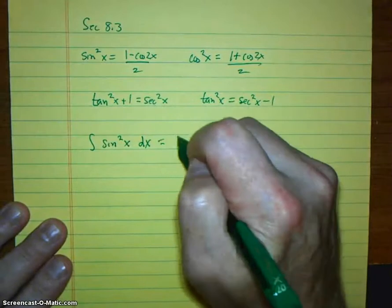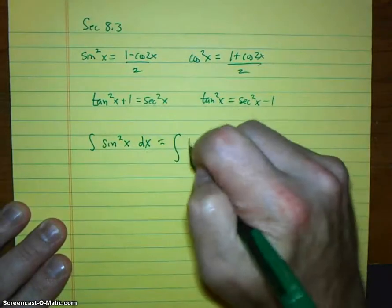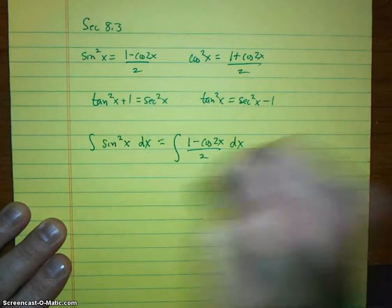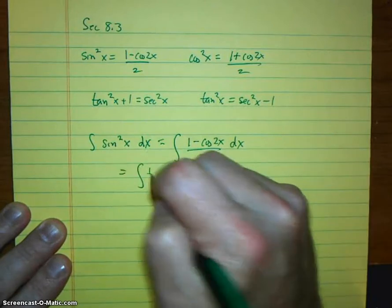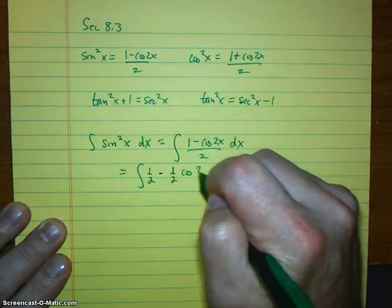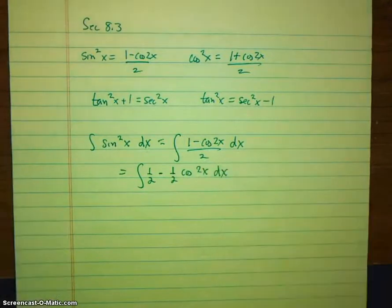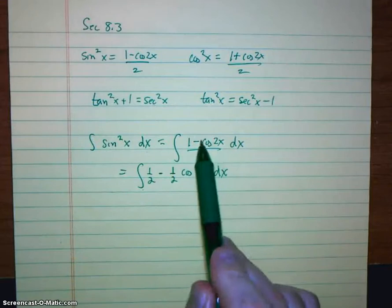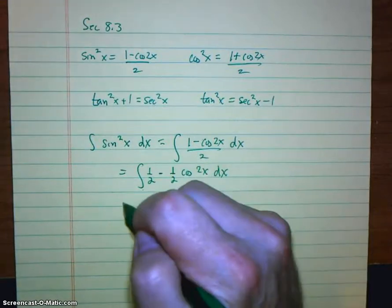So this becomes integral 1 minus cosine 2x over 2 dx, which I'm going to split up a little bit. That's integral 1 half minus 1 half cosine 2x dx. So just split it on the numerator, 1 over 2 is a half, and then there's a 1 there, 1 over 2 is still a half.